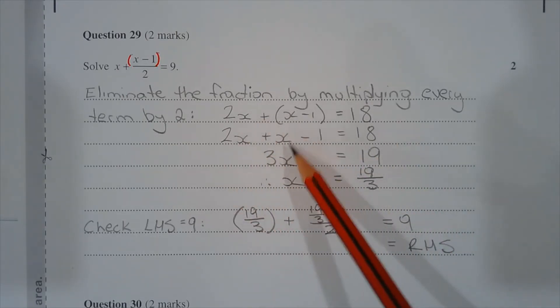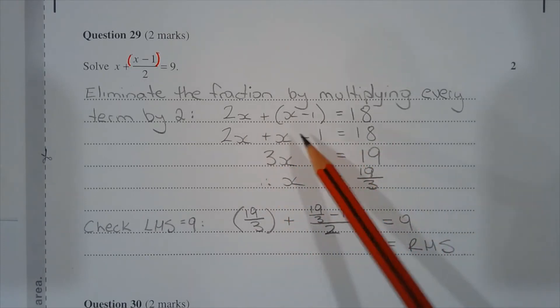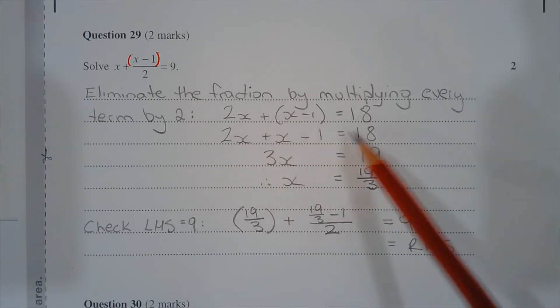Collecting the like terms, 2x plus x is 3x. And adding 1 to both sides, 18 plus 1 is 19.